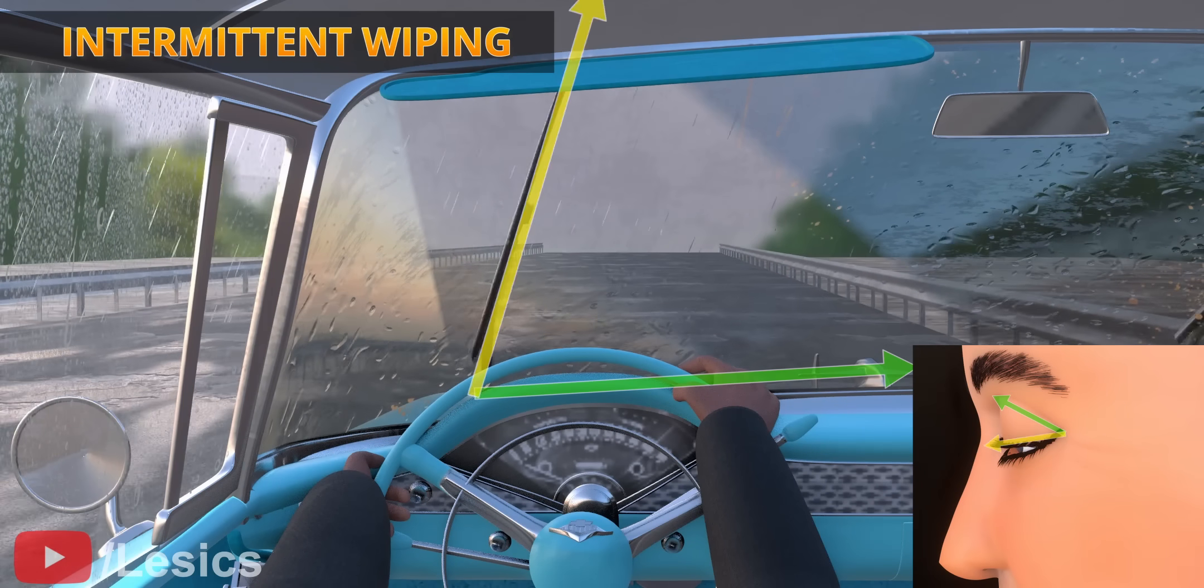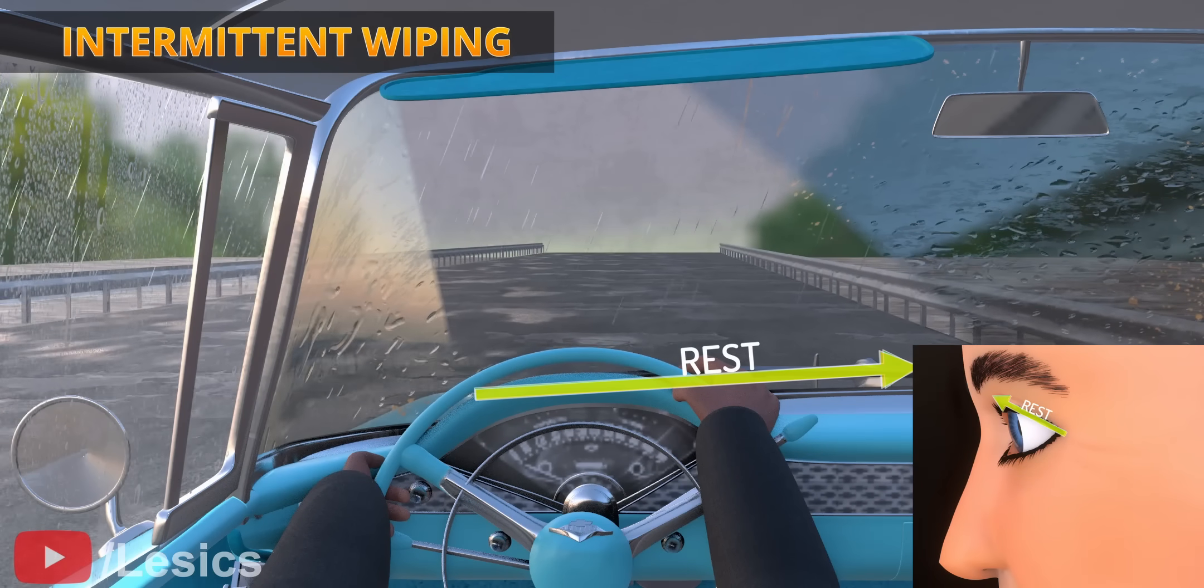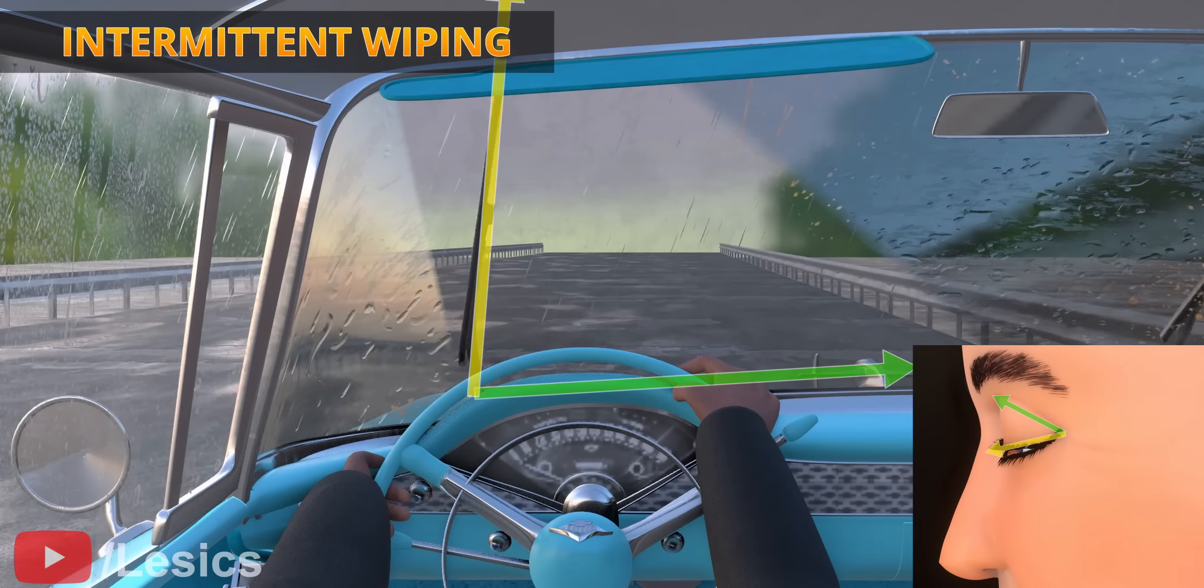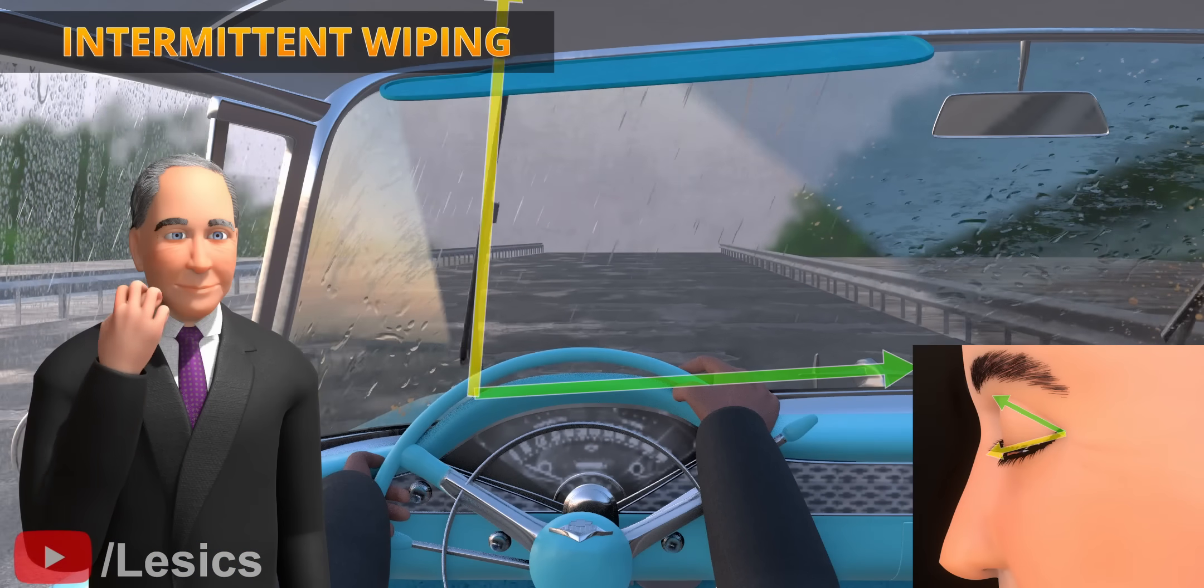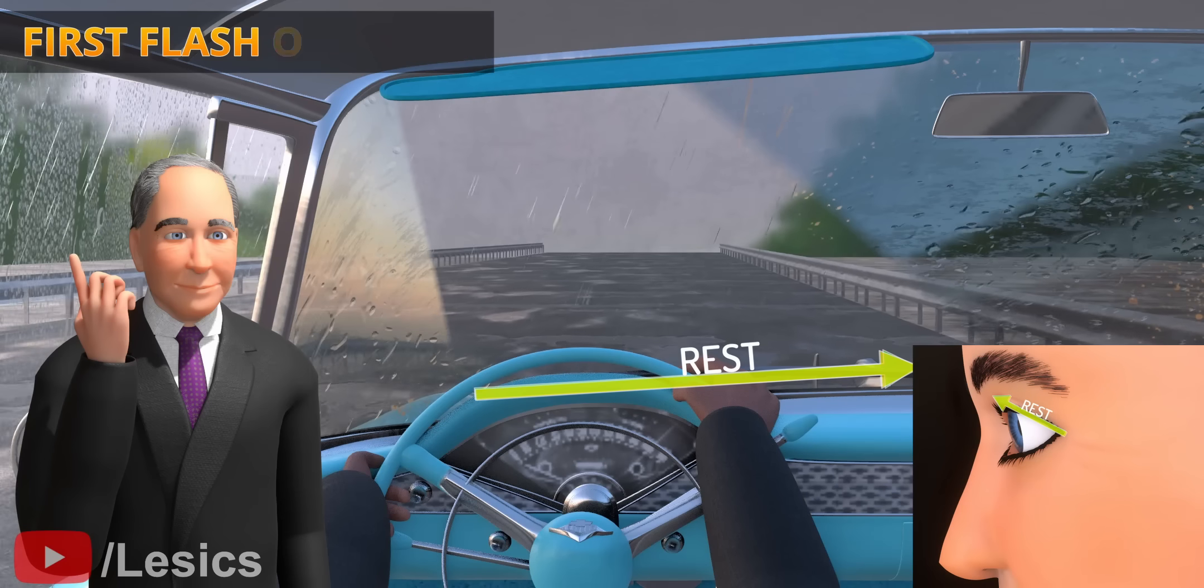In terms of driving, if we stop the wiper blade for a certain period after each wipe cycle, it reduces interference with the driver's vision. This aha moment was Professor Kearns' flash of genius.